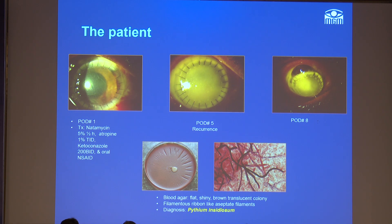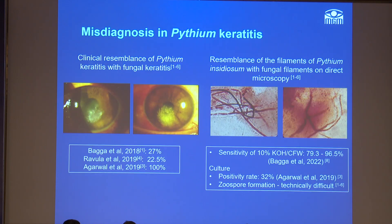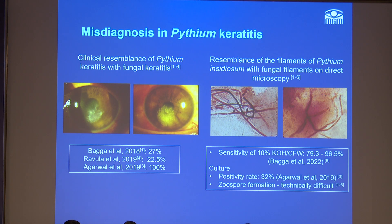So we had been treating pythium keratitis as fungal keratitis and the outcome was poor. But what happened with us is not uncommon. This is mainly because the pythium ulcer resembles that of a fungal ulcer, and on direct microscopy the fungal filaments appear like pythium filaments, so a misdiagnosis is often made.